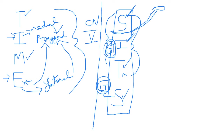Three of the four muscles originate on the fossa that sounds similar to the muscle's name. The supraspinatus originates on the supraspinus fossa, the infraspinatus on the infraspinus fossa, and the subscapularis on the subscapular fossa. The teres minor is the only one that does not originate on a fossa.